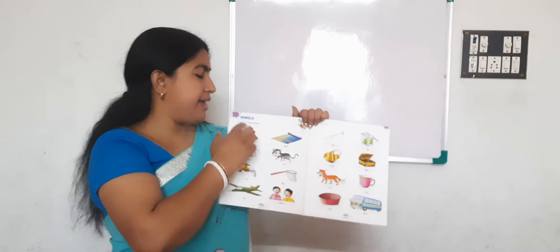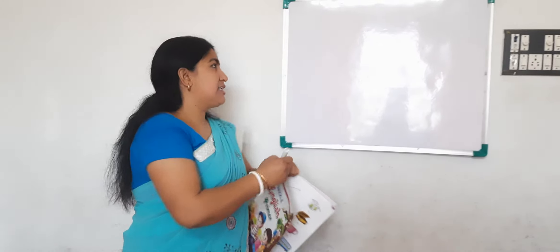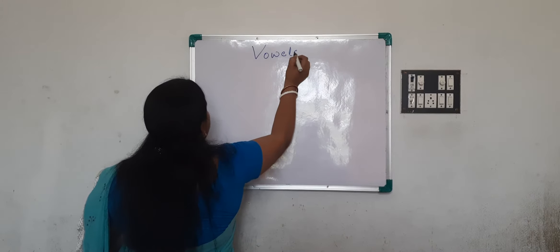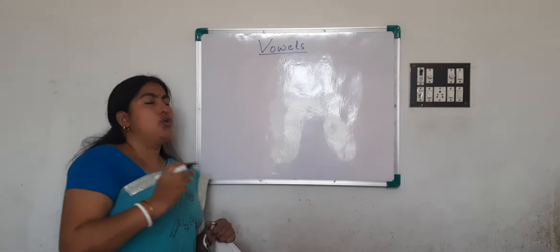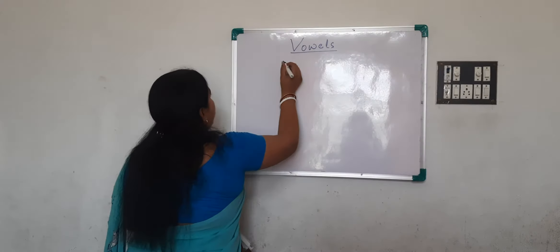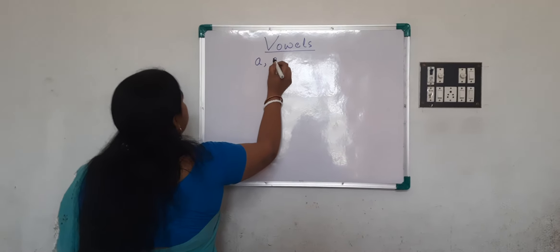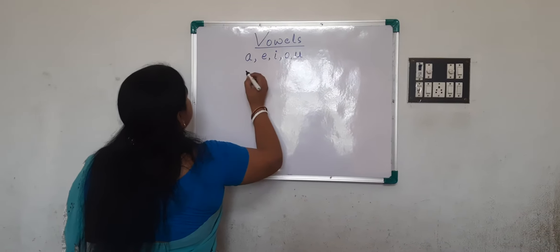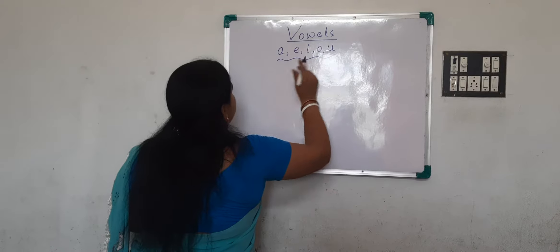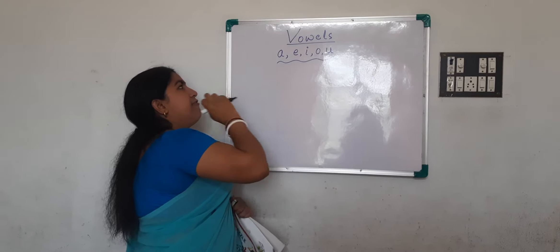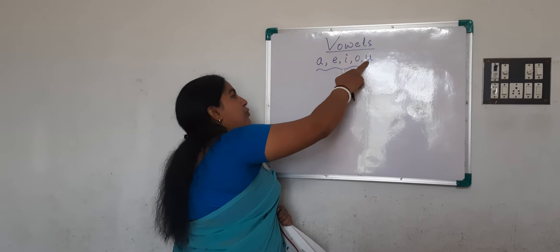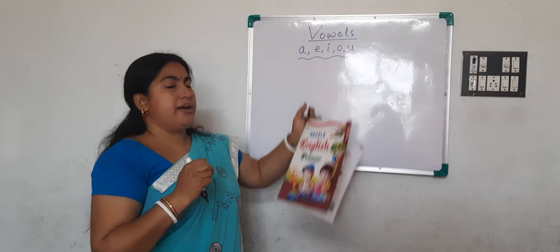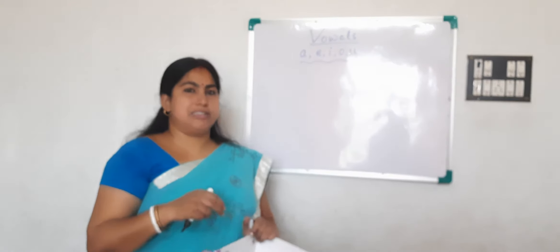Today's topic is vowels. What are vowels? A-E-I-O-U. All of you know A-E-I-O-U. Yes, words begin with these five letters. A-E-I-O-U is called vowels. These are called vowels.